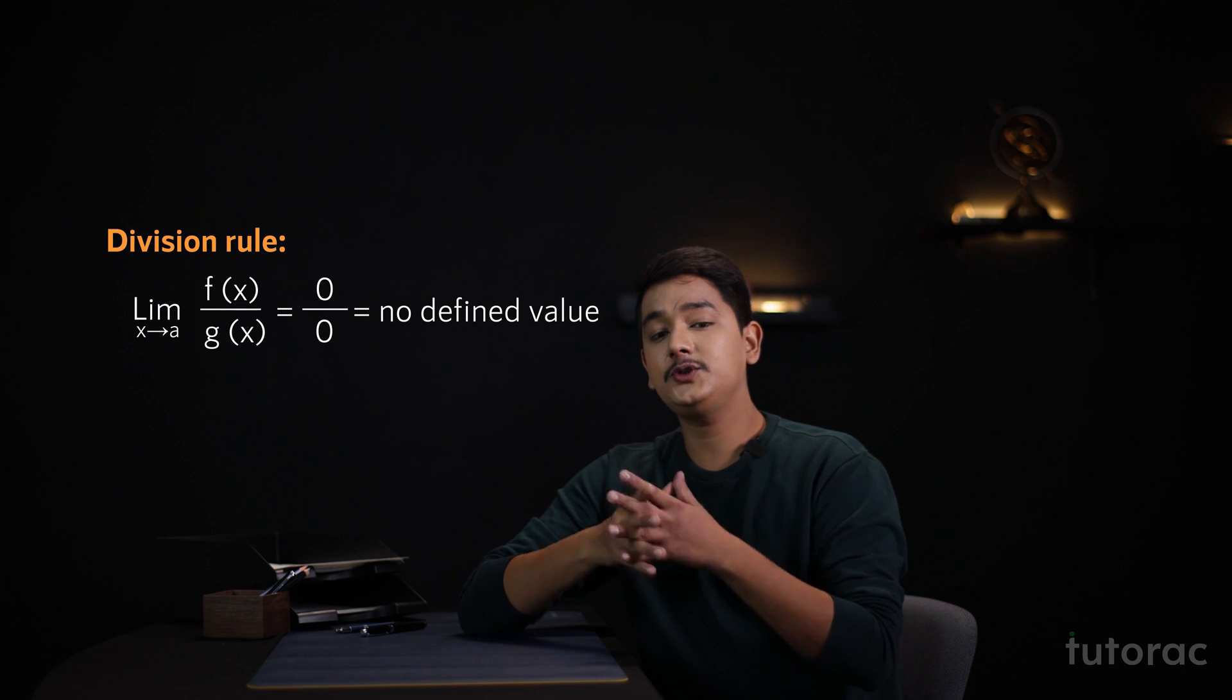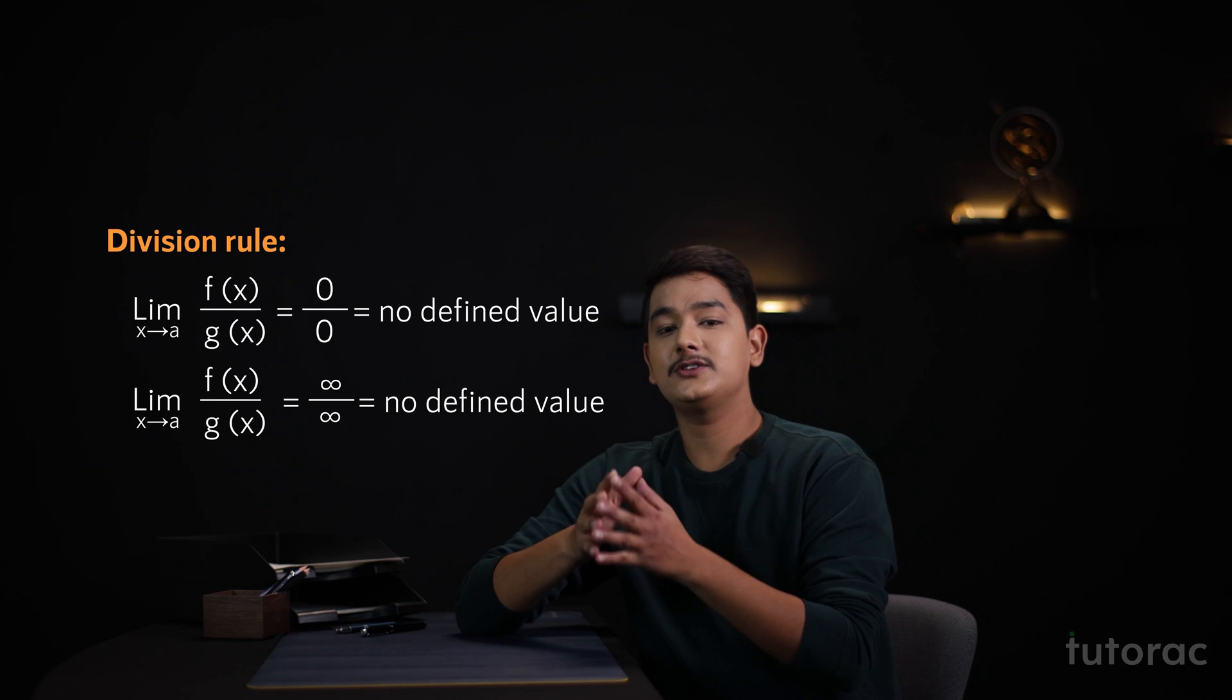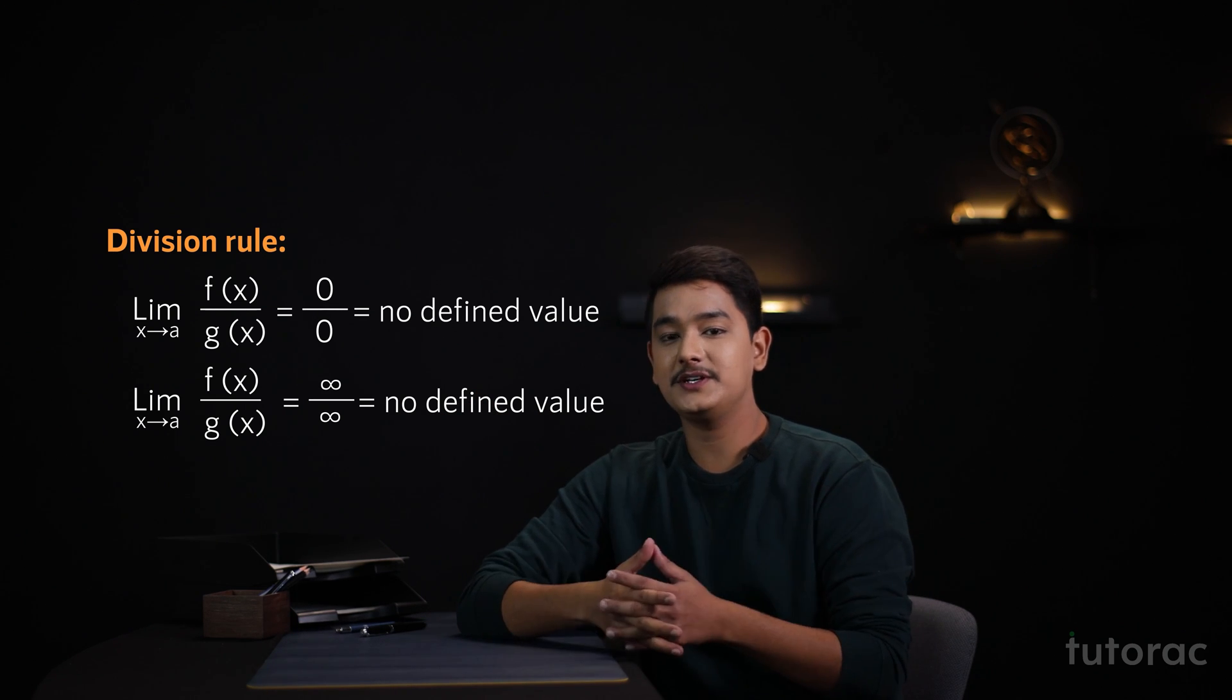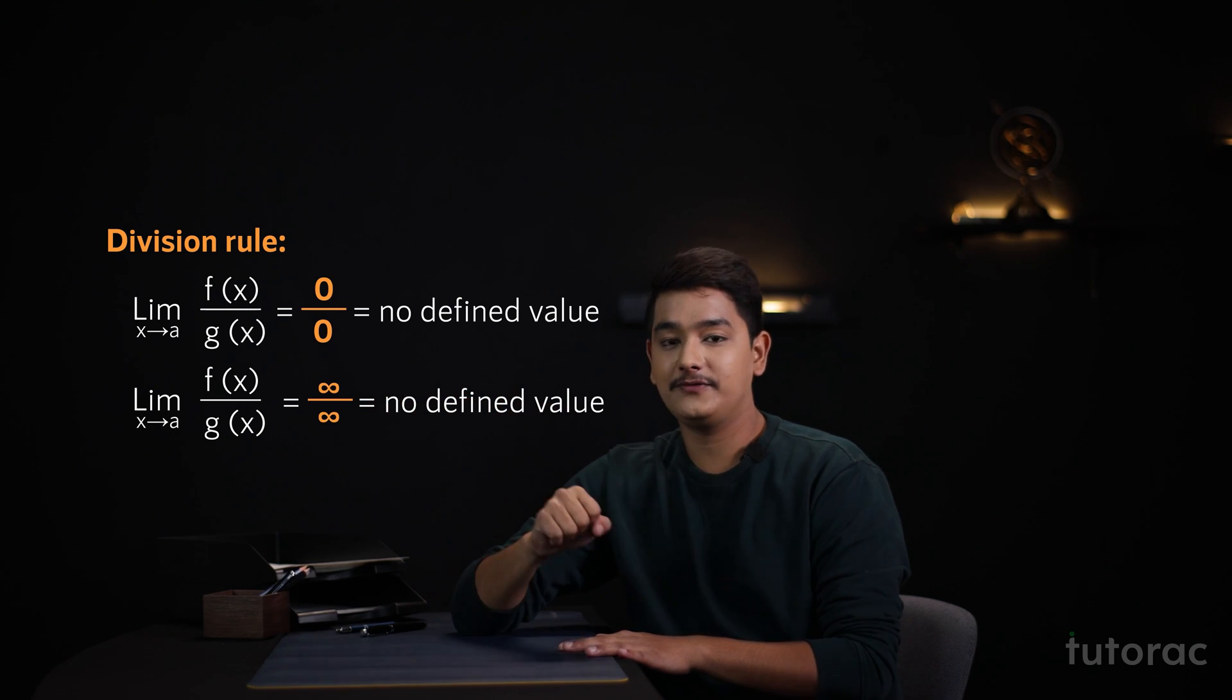Similarly, if both the functions are approaching to infinity, we won't get any value as infinity by infinity is not a defined number. This gives us our two more indeterminate forms that are 0 by 0 and infinity by infinity.